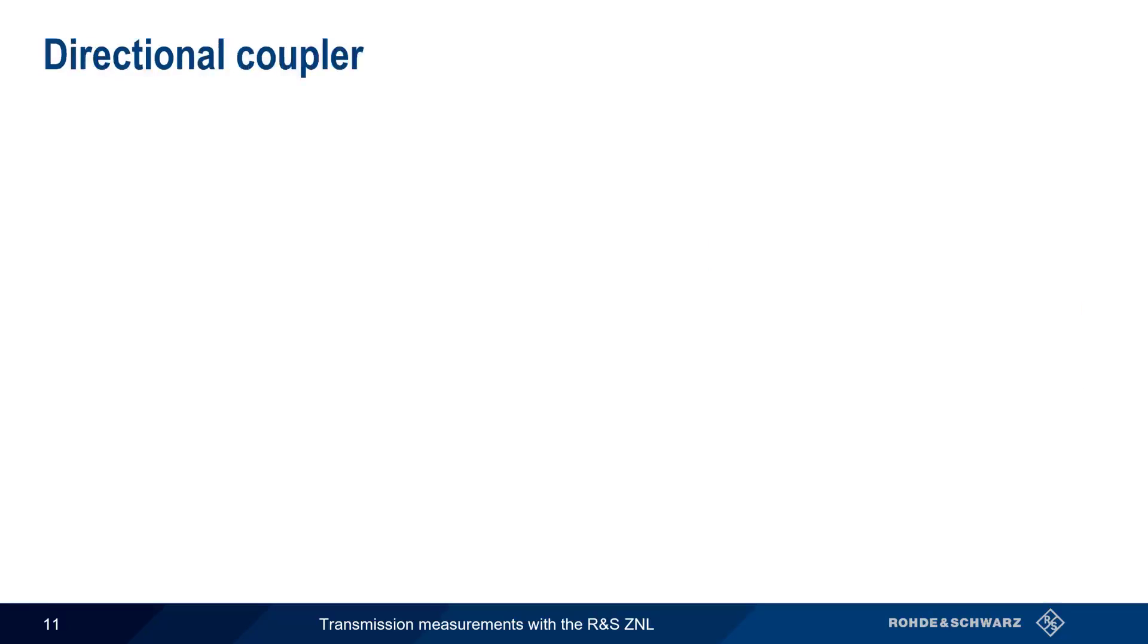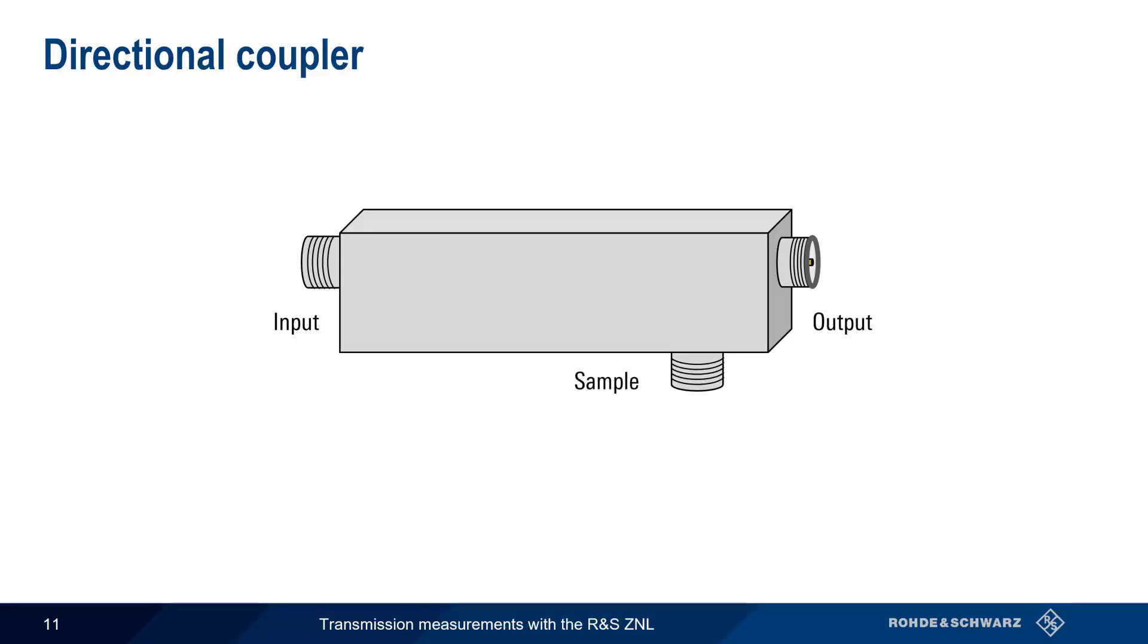In some cases, we can also use a two-port VNA to measure a device that has more than two ports. An example of this is a three-port directional coupler, which has an input port, an output port, and a sample port.